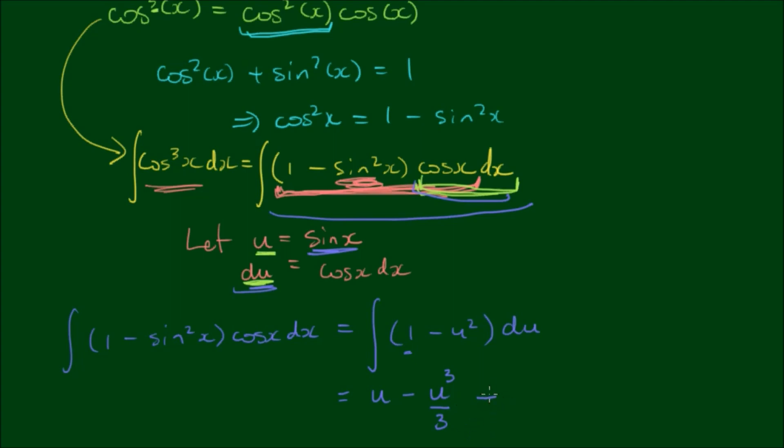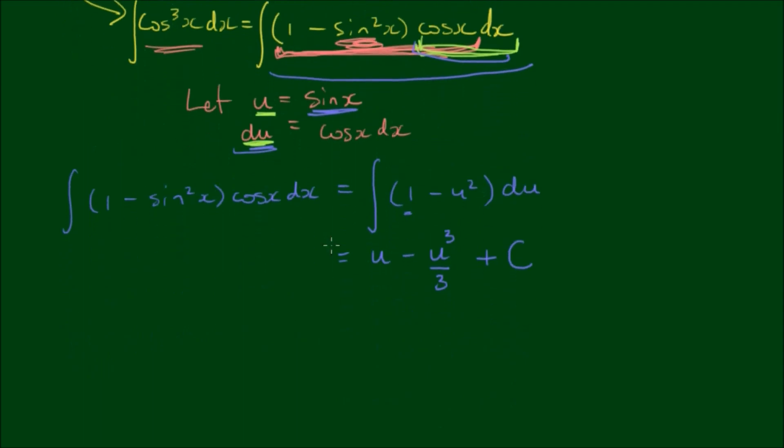To complete the integral, we have to add an integration constant, c. Then to finalize the solution, we substitute sine x back in for u, because u equals sine x. We get the integral of cosine cubed x equals sine x minus sine cubed x on 3 plus c.